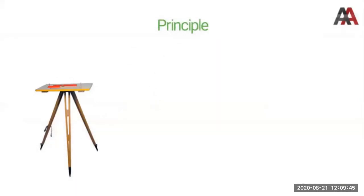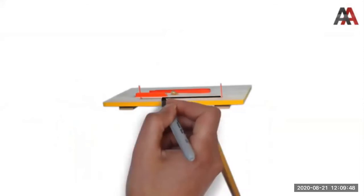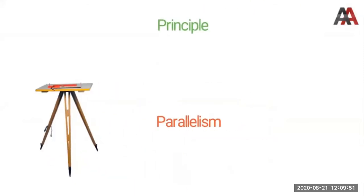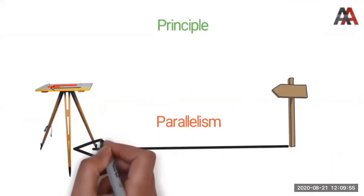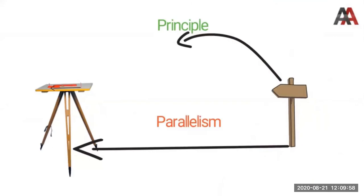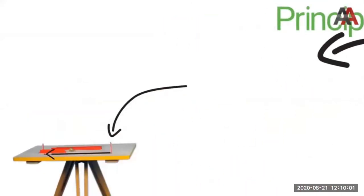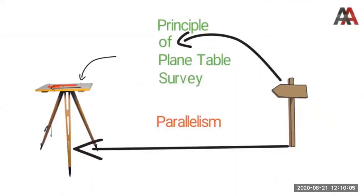I will play a video so you can see how it is done on site. The lab is coming next week, so we will also do some practical work. We will talk about the principle of plane table, which is parallelism — what we draw on the paper is parallel to the corresponding line on the ground related to the object we represent on the paper.